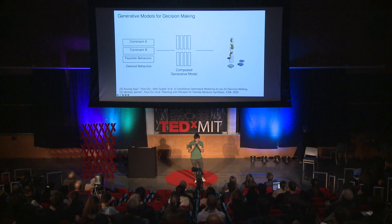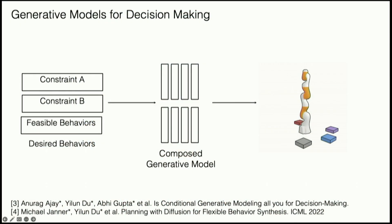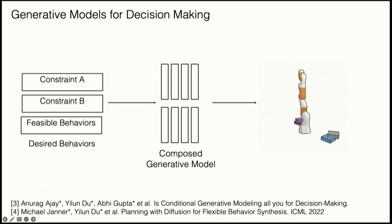Another thing you can do with these models is decision-making — specifically, can you synthesize particular behaviors? I'll talk about stacking blocks. A robot arm is going to stack a black block on a blue block and a purple block on top of a red block. The system works by composing multiple models: a single model specifies different ways to stack blocks, and two other individual models specify the orders in which particular blocks should be stacked. By combining these models together, you generate a stacking trajectory with the particular desired order.